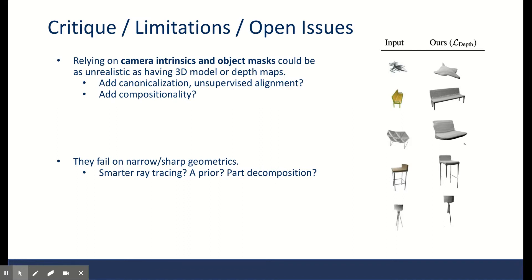Also, they require camera intrinsics, which limits the compatibility of this method with available datasets. And finally, it seems that their model fails on capturing sharp details like narrow legs of furniture. Probably it can be mitigated by smarter sampling or ray tracing priors.